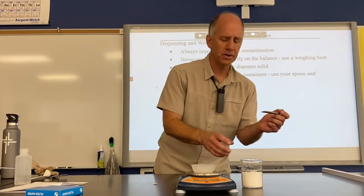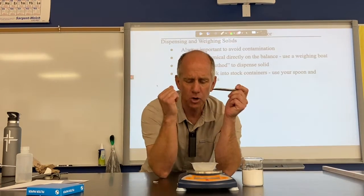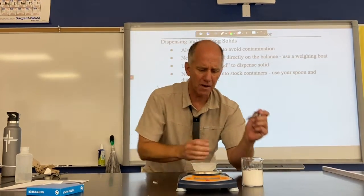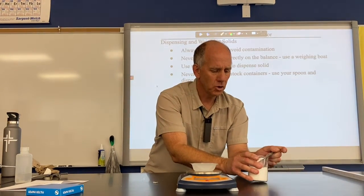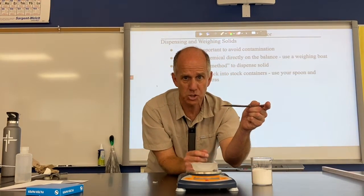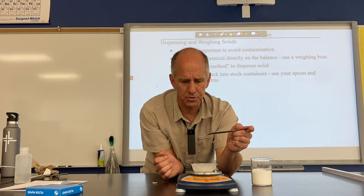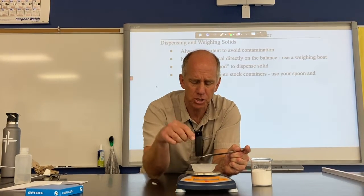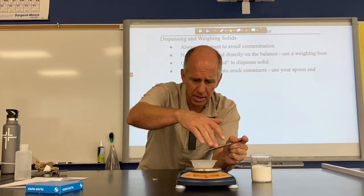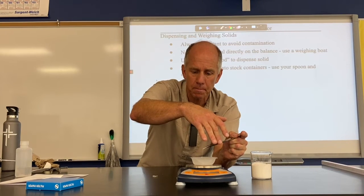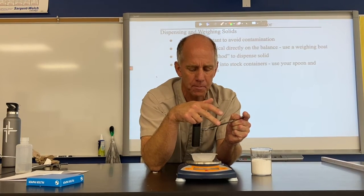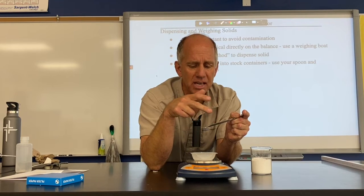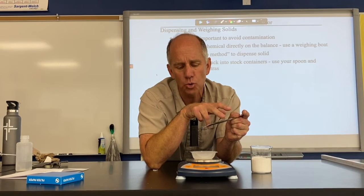Now get your gram of salt. Put your elbows on the table, keeping your clothes off the counter. Load a chemistry spoon or spatula with salt, hold it just above the weighing boat — not from 30,000 feet above — and start to tap. As you tap, you'll see the mass go up, and you sneak up on it until you get to one gram.